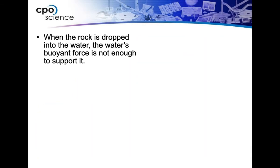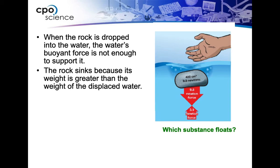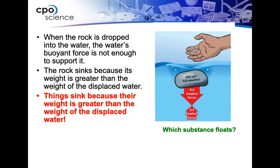When you talk about the buoyant force, you're getting into why certain things sink and why other things float, and it really all has to do with the buoyant force. When the rock is dropped into the water, the water's buoyant force is not enough to support it. The rock sinks because its weight is greater than the weight of the displaced water. If you want something to float, you have to make the weight of the displaced water larger.